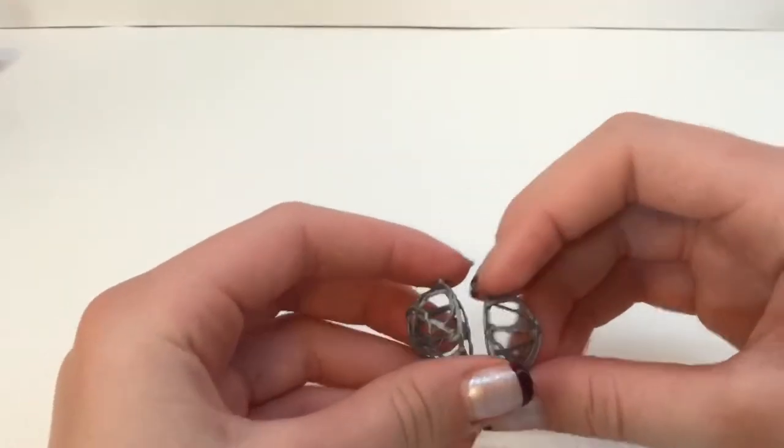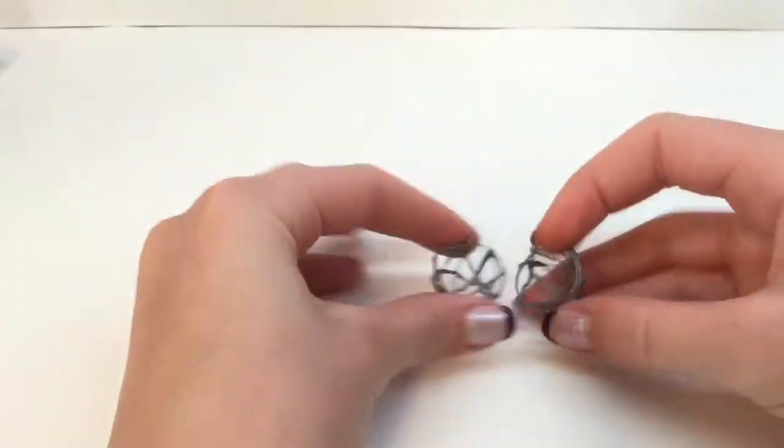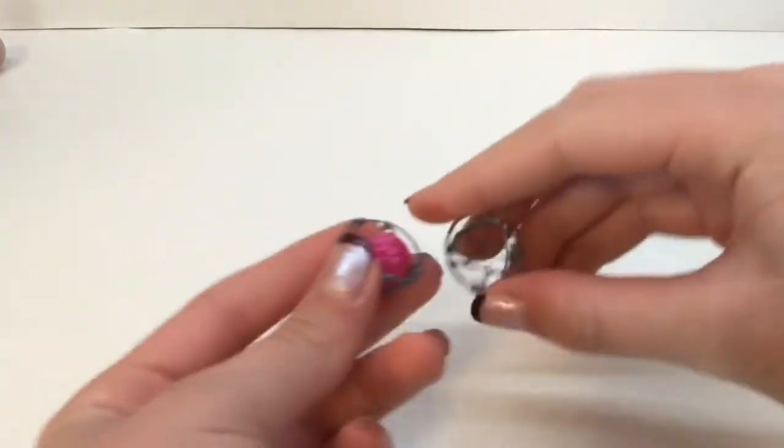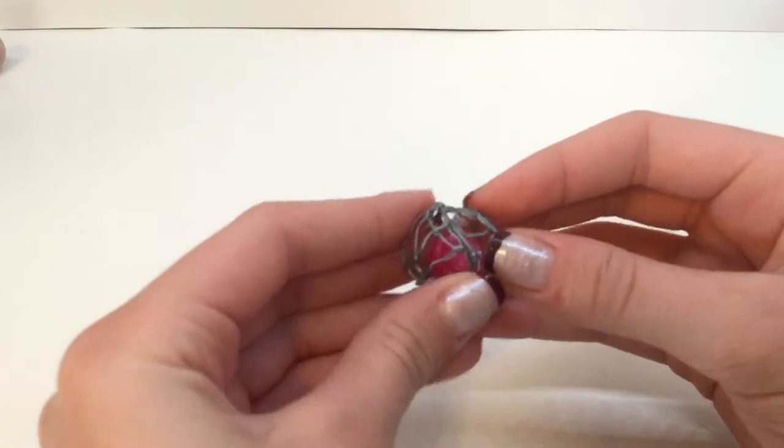Now you can glue the two pieces together, but before we do that I like to add in a little something else, like a bead or a little rock. Here I'm adding in a little pink bead—you can use whatever kind of object you would like. Then just attach the two pieces together.